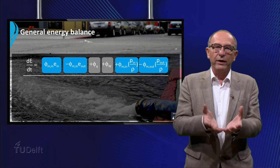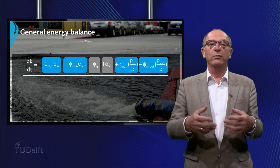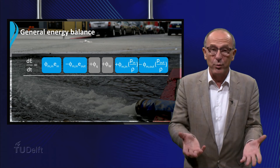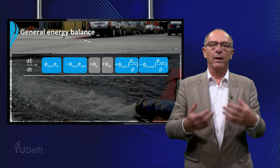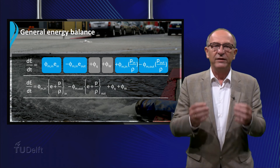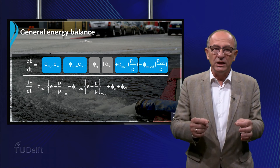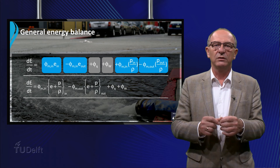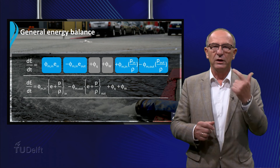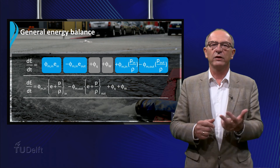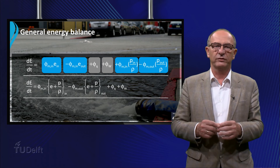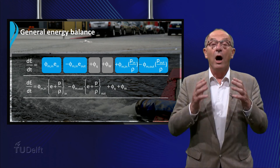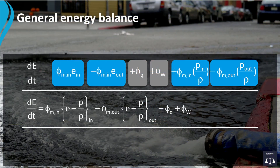If we combine all the terms which are dependent on the mass flow rate, we get the following formula. We have to remember that the energy concentration E consists of the sum of three types of energy: the potential energy, the kinetic energy and the internal energy, all per unit of mass. After substitution of the energy concentration E, the total energy balance can be written as follows.